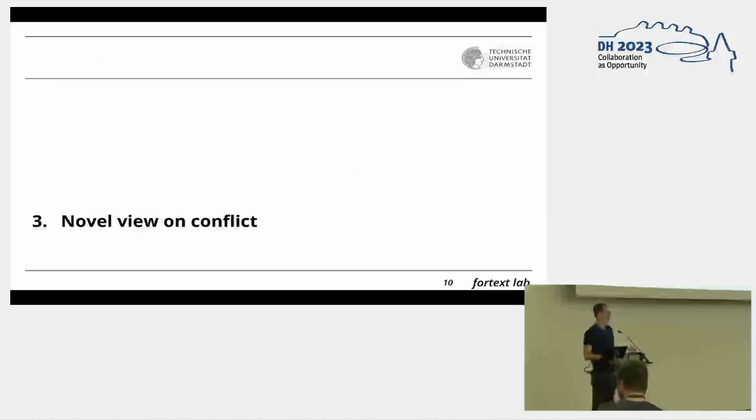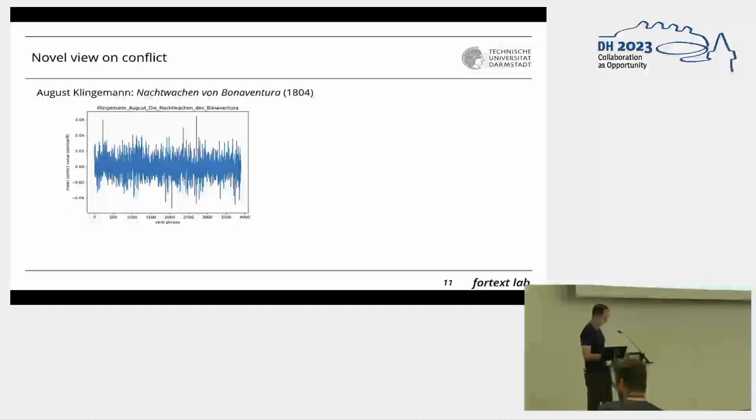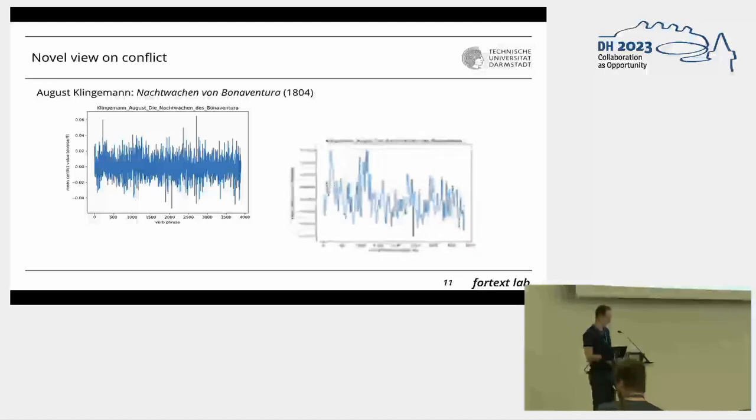We calculated sentiment and conflict values as explained previously. Here are some results. We'll first look at a single novel, then move to the entire corpus. Here I plotted the mean conflict values of all phrases in Klingemann's Nachtwachen von Bonaventura using the Dornsai approach. To get a better overview, I applied a simple smoothing algorithm with a moving average window size of 50. We can already see a type of conflict progression.